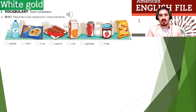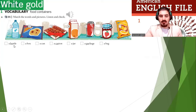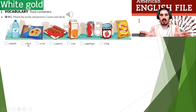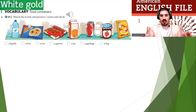Now, the White Gold vocabulary: food containers. Everybody, match the words and pictures. For example, we have a bottle — a bottle is a container. A box is a container. You keep the food in the container. Match them.